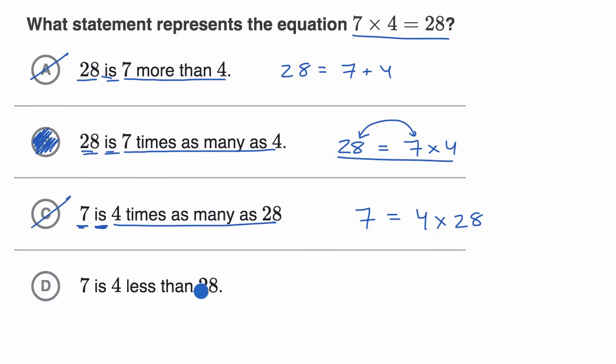Seven is four less than 28. Well, this equation would be seven is equal to four less than 28, which would be 28 minus four. Once again, not only is this not true, 28 minus four is 24, not seven. But this is not that original equation. So we'd rule that one out as well. So we like our choice B.